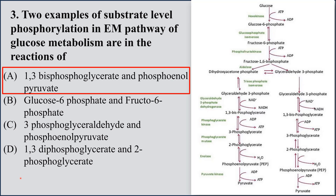This is the 10-step reaction of glycolysis with the energy payoff phase, the energy generating phase. One is 1,3-bisphosphoglycerate converted into 3-phosphoglycerate. In this reaction, as the phosphate is attached to positions 1 and 3, the position-1 phosphate gets transferred to ADP and converts it into ATP.